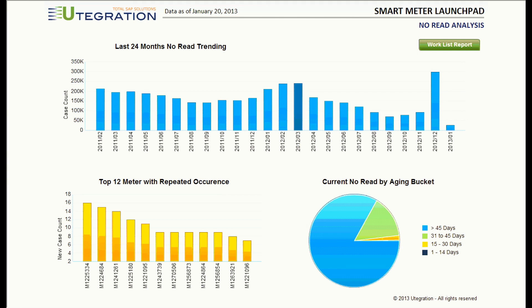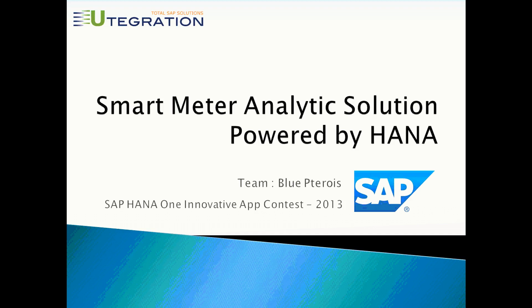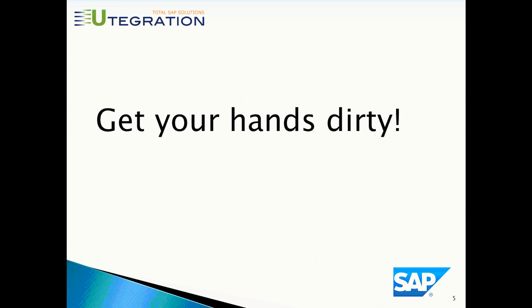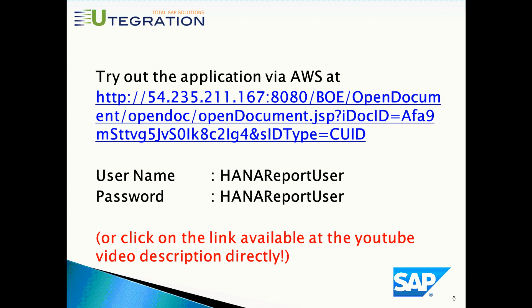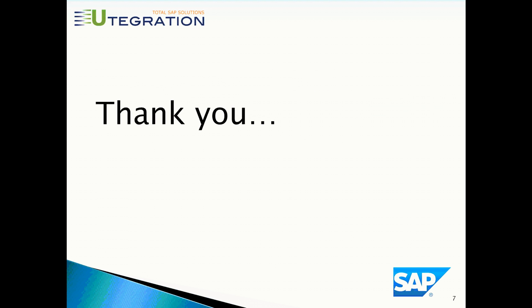You can also use the detailed report to create a worklist for operations. Now you can try out the application yourself — it's available on Amazon Web Services at the provided location. Here is the username and password for your login. Alternatively, you can click on the link available in the YouTube video description at the bottom. Thank you for watching, and have fun!